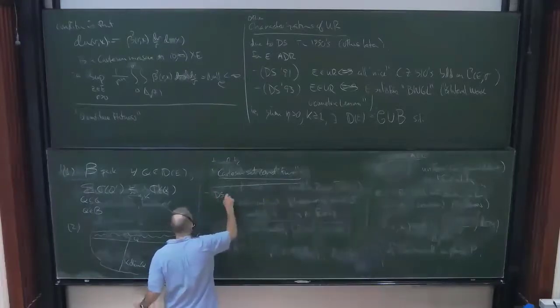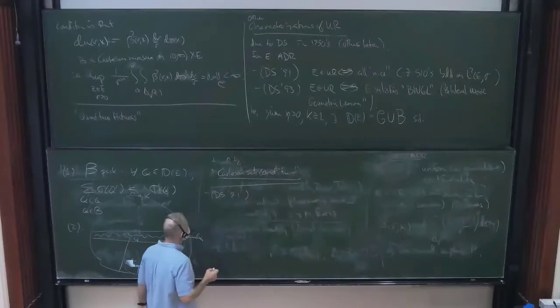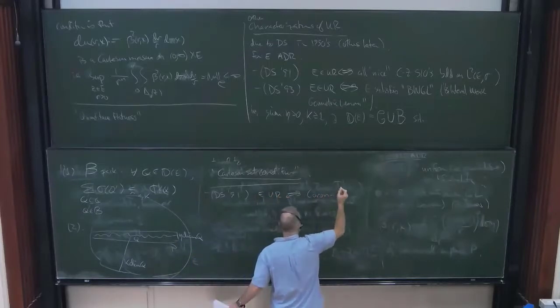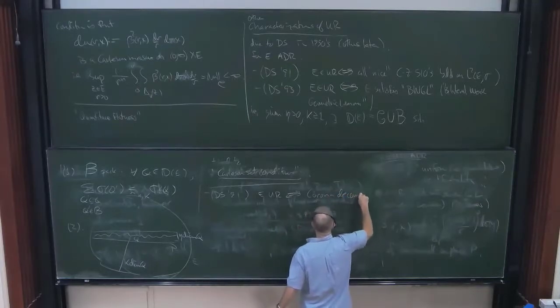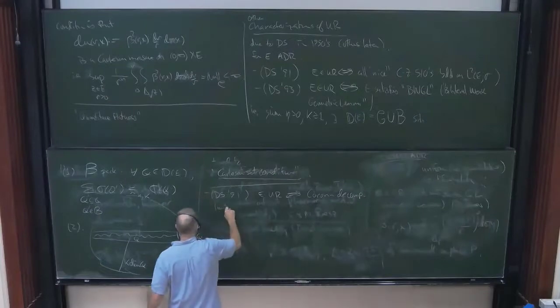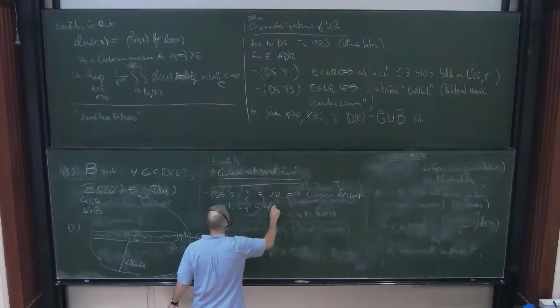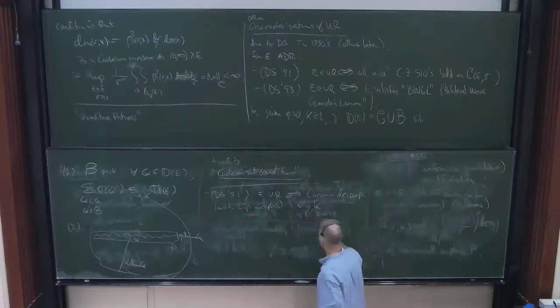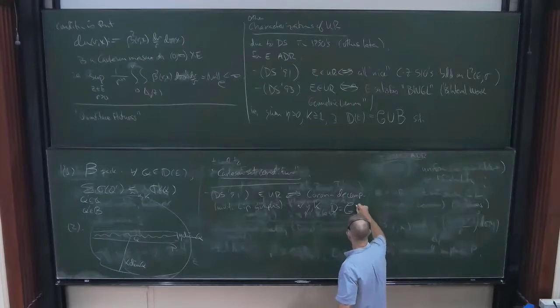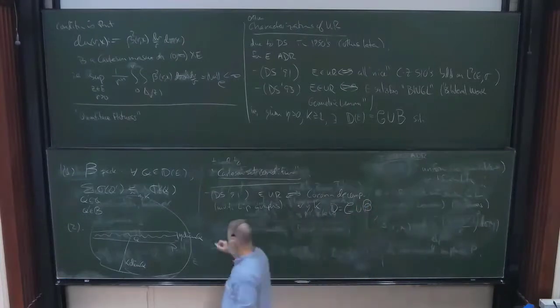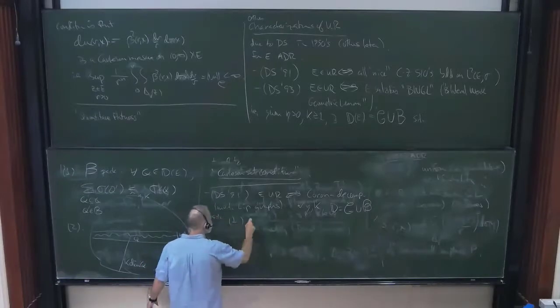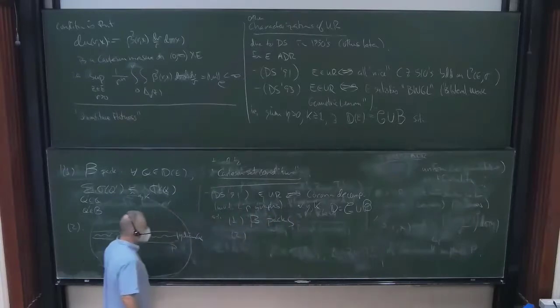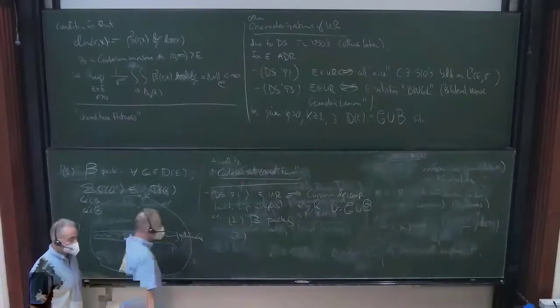Another characterization is that E is UR if and only if it has a corona decomposition with respect to Lipschitz graphs. What does this mean? It means that, again, for all eta K as in here, there's a decomposition, once again, into good cubes and bad cubes, such that, first, the bad cubes pack. This is exactly the same as here. Second, though, there's going to be a subtle difference from this Carleson set condition. Second, such that the good cubes G further subdivide.